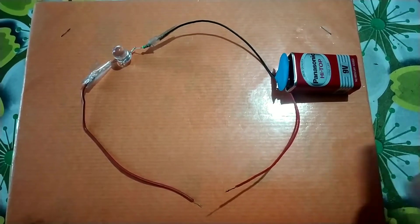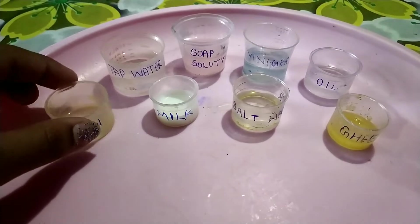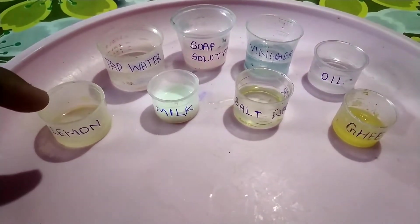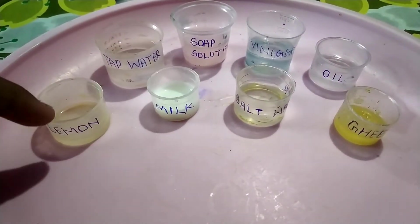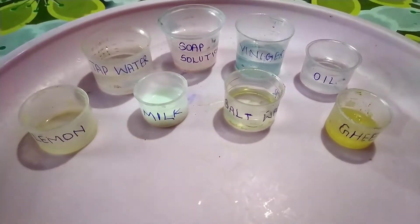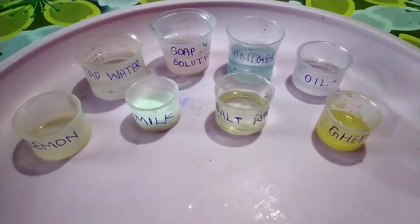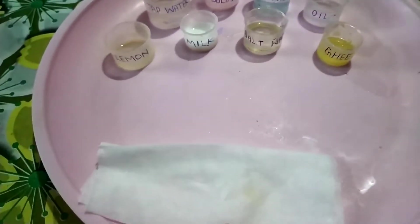And we have to arrange a setup like this. Now we need some plastic containers and we will fill them up with lemon juice, tap water, milk, soap solution, vinegar, salt water, ghee and oil, and one cotton cloth.